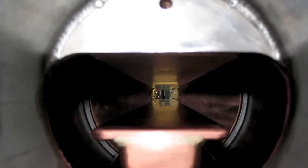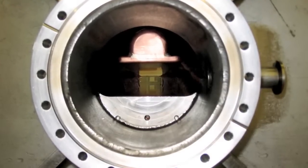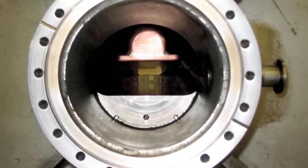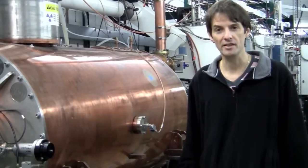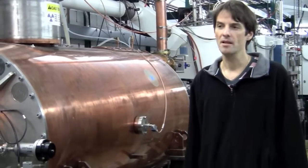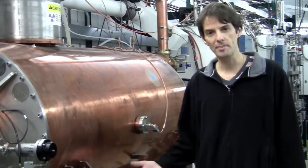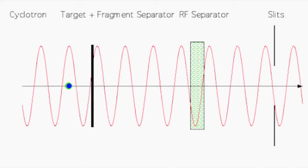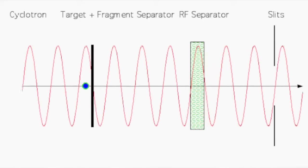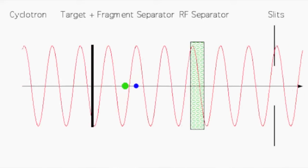This deflection happens between two horizontal plates which are located inside the cavity where the radio waves have maximum intensity. Because different isotopes have different speeds, they arrive at this cavity at different times, and the radio waves can deflect the unwanted particles.